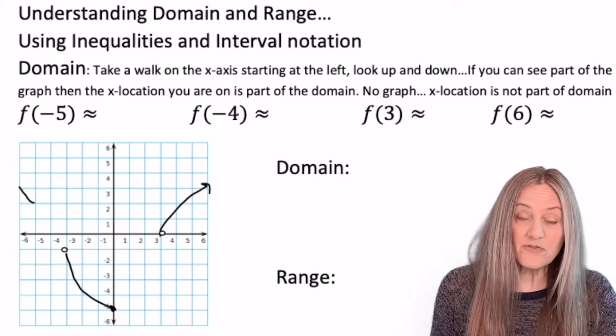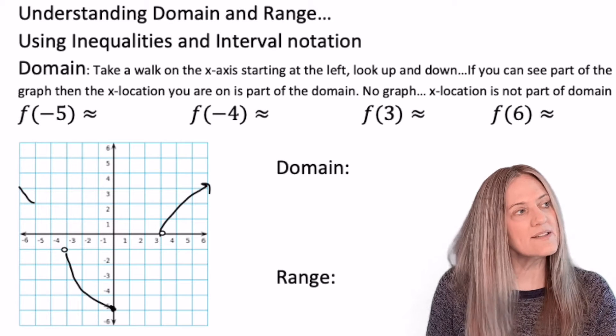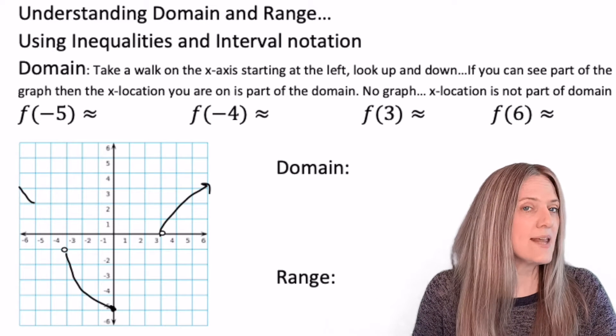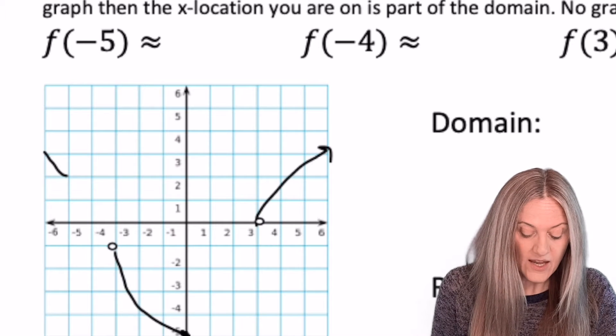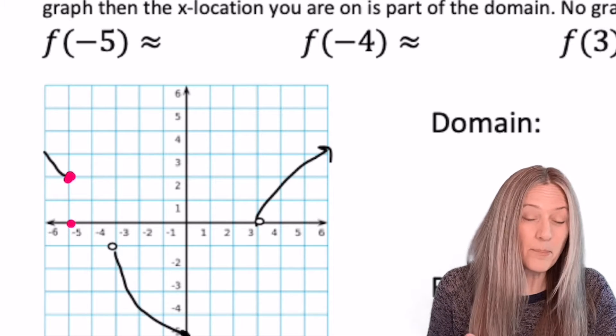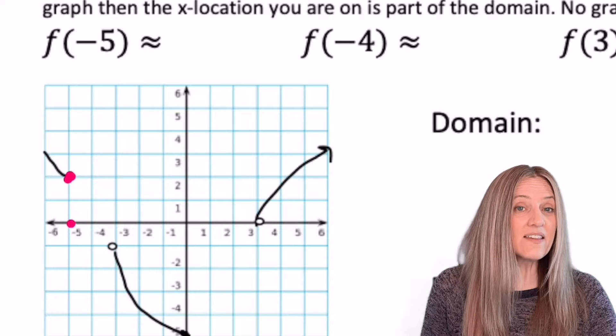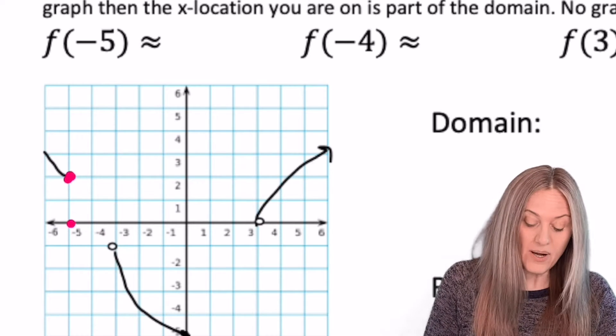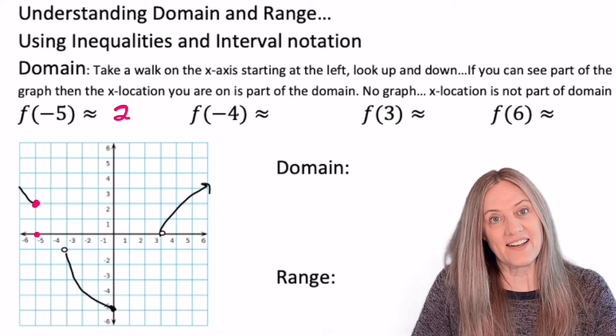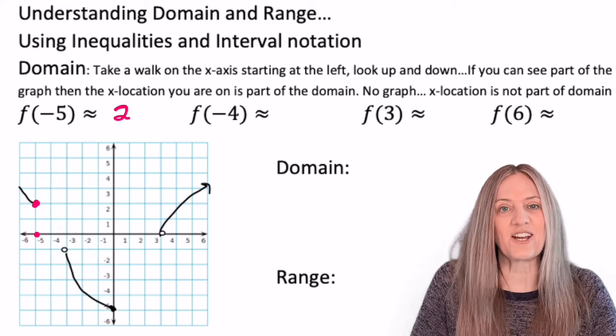We see in this first graph we're asked to find f of negative 5. So what does that mean? The input is negative 5. I go along the x-axis till I find negative 5, and then I go up and find the point where the graph exists. So we see that the output when x is negative 5 would be positive 2. You go ahead and find f of negative 4, f of 3, and f of 6. Come back and check your answers.